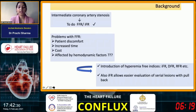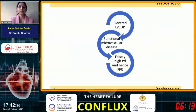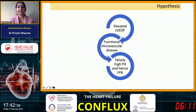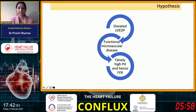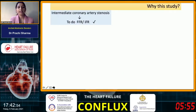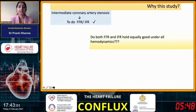We also know that instantaneous wave-free ratio allows easier evaluation of serial lesions with pullback. It was hypothesized that in conditions with elevated LV end diastolic pressure, there is increased functional microvascular disease, which leads to falsely high distal pressure and hence falsely elevated and false negative fractional flow reserve. Why did we do this study? It is known that in intermediate coronary artery stenosis, we have to do functional testing, but we do not really know if both FFR and IFR hold equally good under all hemodynamics.